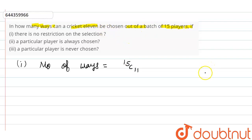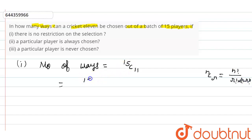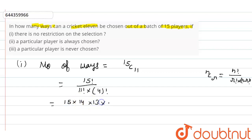Because if we have n things and we have to choose r things from them, the number of ways is nCr. So 15C11 — and we know nCr equals factorial n upon factorial r into factorial (n minus r) — so 15C11 equals factorial 15 upon factorial 11 into factorial 4. This gives us 15 × 14 × 13 × 12 × factorial 11, upon factorial 11 into 4 × 3 × 2 × 1.